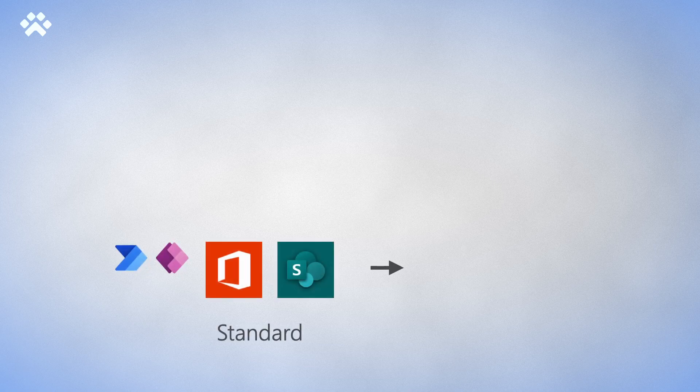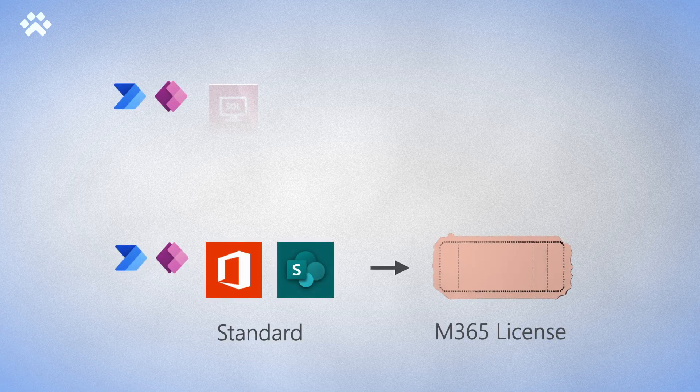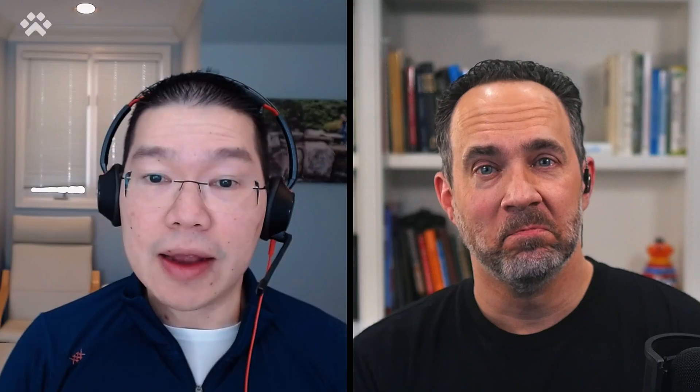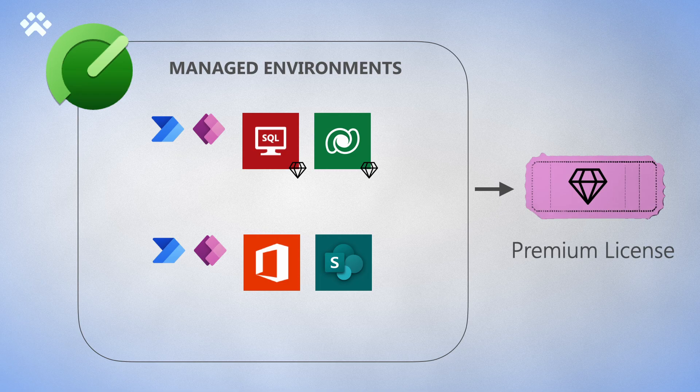What about licensing? Managed environments does require premium standalone licenses. Today you have two types of apps and flows: standard apps and flows that use standard connectors like SharePoint, which require a user to simply have an Office license; and premium apps and flows that use premium connectors like SQL and Dataverse, which require a standalone license with premium use rights. When you turn on managed environments and run an app or a flow in that environment, you will need a standalone license with premium use rights — including for standard apps and flows using standard connectors. Why does this require everyone to have a premium license?